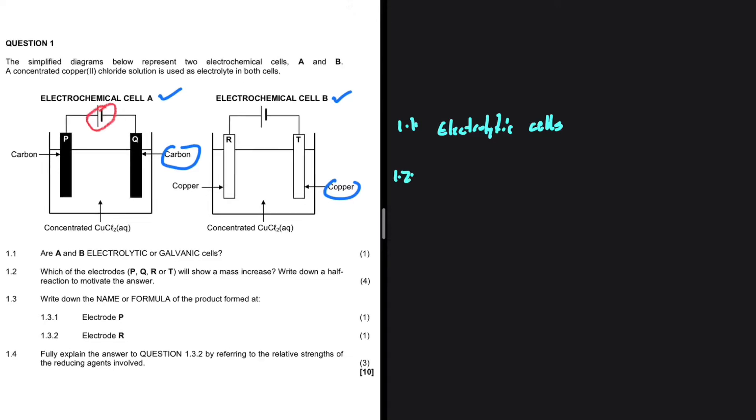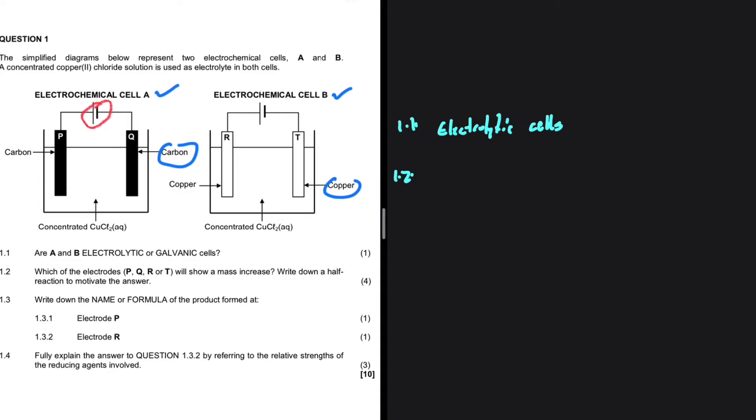1.2, which of the electrodes P, Q, R, T will show a mass increase? Write down a half reaction to motivate the answer.